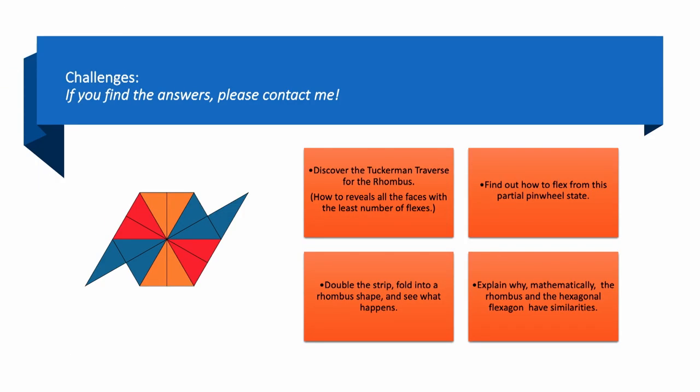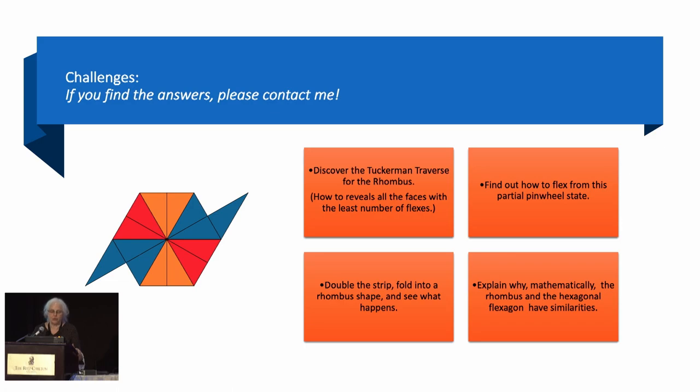There's a number of challenges. This is part of the mystery of this flexagon. I can't flex from that partial pinwheel state into another rhombus or pinwheel. If I were to flip it over, that side I could pinch flex. But I can't do the double slide from this one for some reason. And I think because of that, I can't find the Tuckerman Traverse for this flexagon, which is flexing so that all the faces are revealed with the least number of flexes.